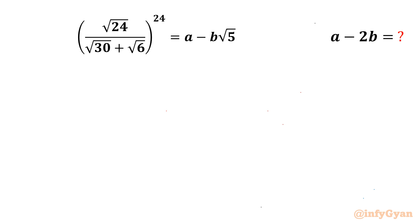Welcome back to InfiGam, my dear friends. In this video we are going to take up one very interesting question from Radical Maps. We have to evaluate the expression a minus 2b, if the given equation is: the square root of 24 over (square root of 30 plus square root of 6), whole power 24, equals a minus b times square root 5.